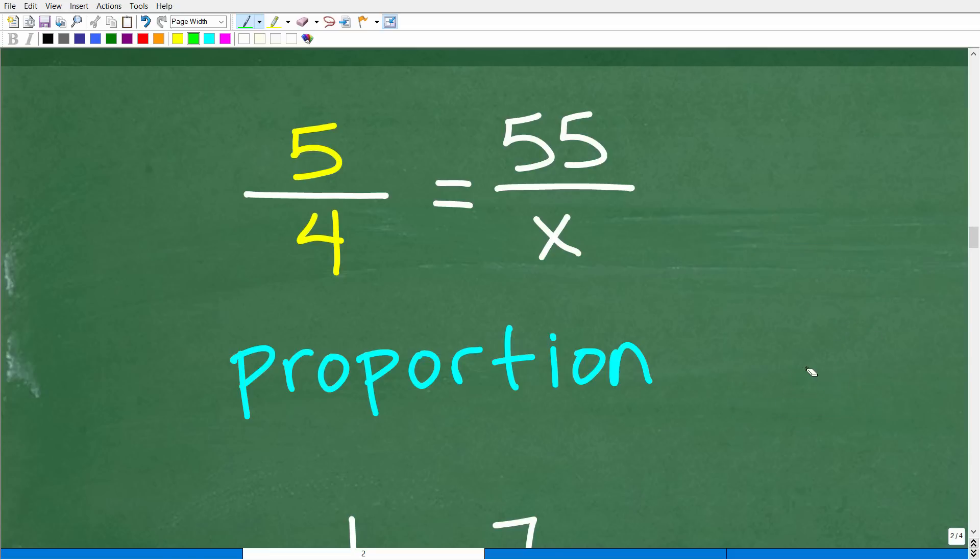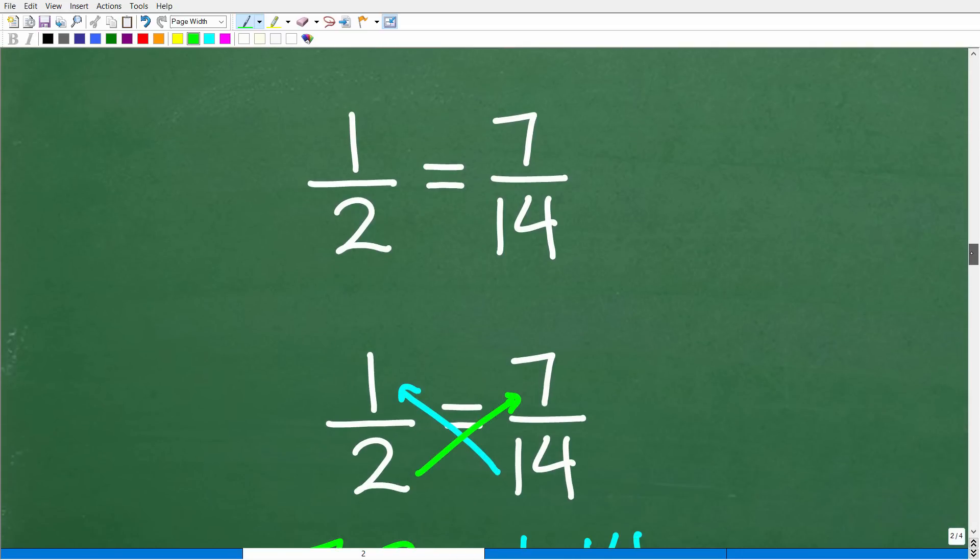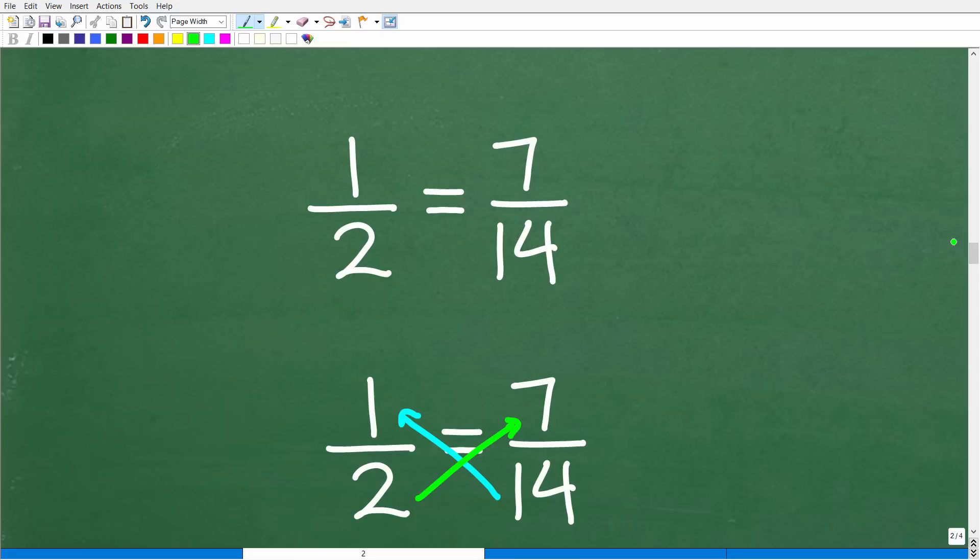Okay, but a proportion, by definition, is one fraction that's equal to another fraction. And that's what we have right here. But why do we really care if something is a proportion? Well, if something is a proportion, we can use this thing called a cross product. And this is an awesome kind of property of proportions, and it makes things very easy to solve.